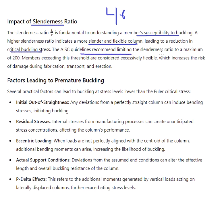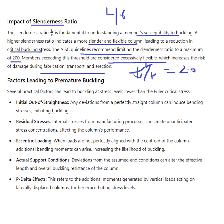AISC guidelines limit the slenderness ratio to a maximum of 200, meaning KL/R must not exceed 200. Exceeding this threshold means members are considered excessively flexible, which increases the risk of damage during fabrication, transportation, and installation — excessively flexible members can lead to premature buckling.